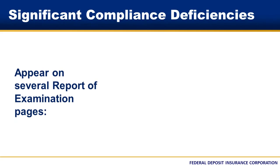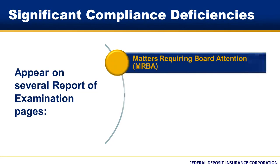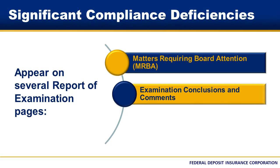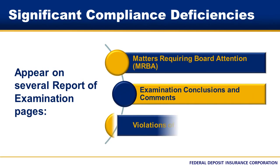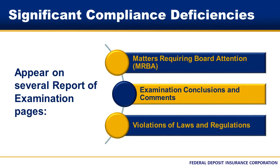Discussion of significant compliance deficiencies appears on several pages of the report of examination. They are communicated at the beginning of the report of examination on the Matters Requiring Board Attention, or MERBA, page. When bank management promptly takes action to address concerns detailed in MERBAs, potential problems can be fixed early before they become more difficult to address. Significant compliance deficiencies will also be discussed in more detail on the Examination Conclusions and Comments page, and will further be addressed on the Violations of Laws and Regulations page. Significant compliance deficiencies relate to a failure to provide an effective BSA AML compliance program, meaning there are deficiencies in one or more of the required program components.